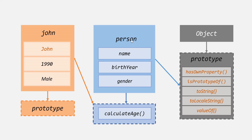Because this person is an instance of object constructor, this person object has access to the prototype of object constructor. That means we can use any of the methods attached to the prototype of object constructor on this person constructor. Also, this John is an instance of person constructor, so this John object has access to the prototype of person object. And this person object has access to the prototype of object constructor. So because of this prototype chaining, this John object will also have access to the prototype of object constructor.